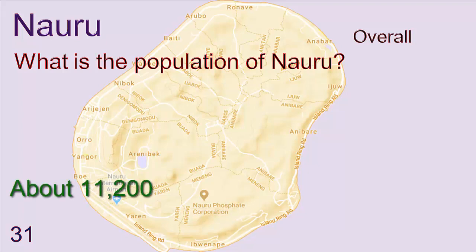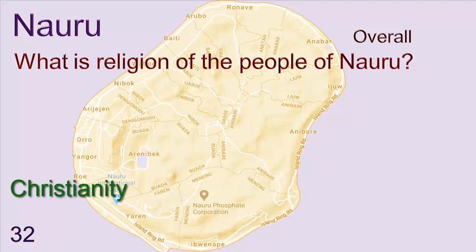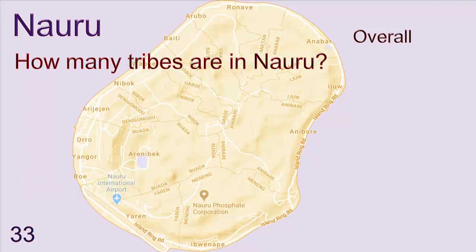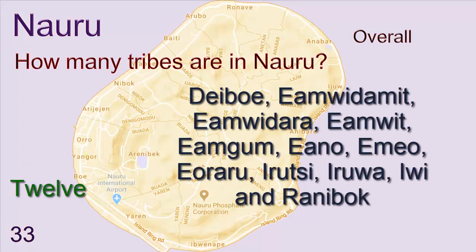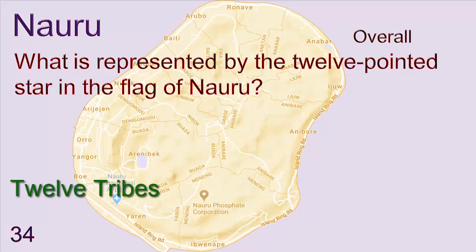What is the population of Nauru? About 11,200. What is the religion of the people of Nauru? Christianity. How many tribes are in Nauru? 12. The 12-pointed star in the flag of Nauru represents the 12 tribes.